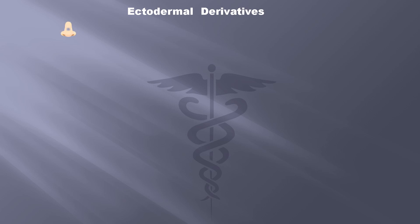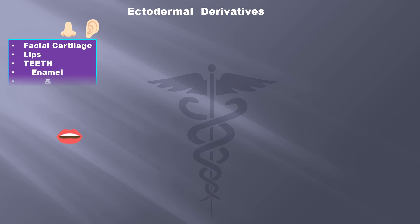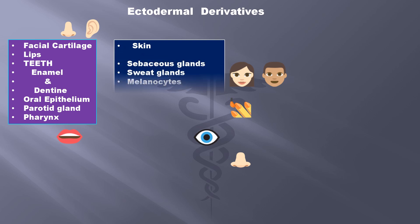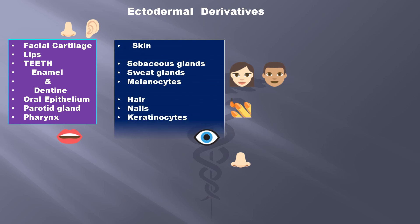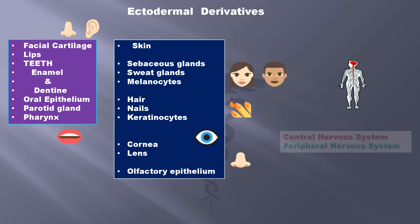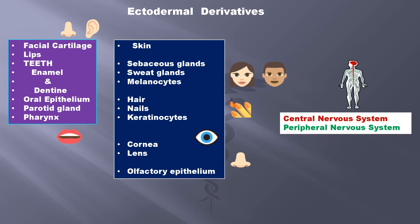Ectodermal derivatives — these are the structures: facial cartilage, lips, in teeth both enamel and dentine, oral epithelium, parotid gland, pharynx, skin, sebaceous glands, sweat glands, melanocytes, hair, nail, keratinocytes, cornea, lens, and olfactory epithelium. The central and peripheral nervous systems are also derivatives of the ectoderm.